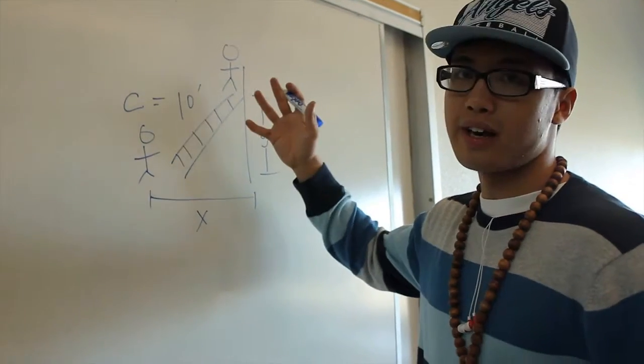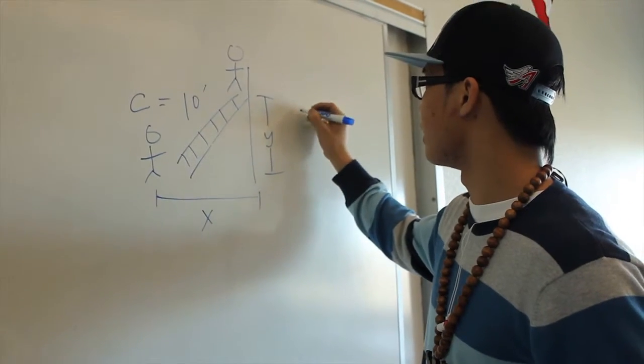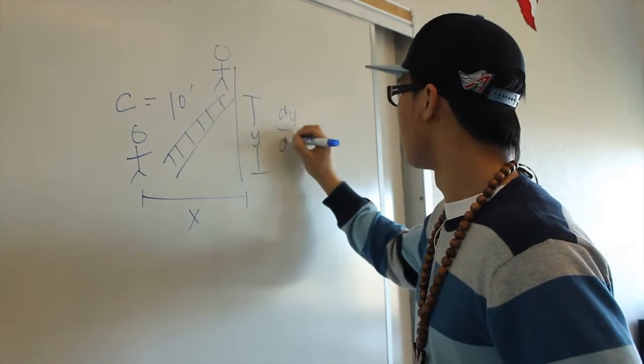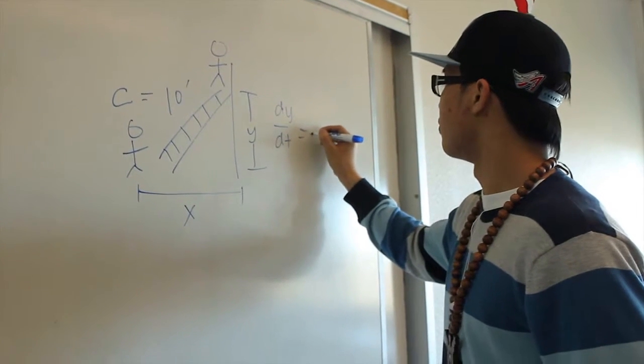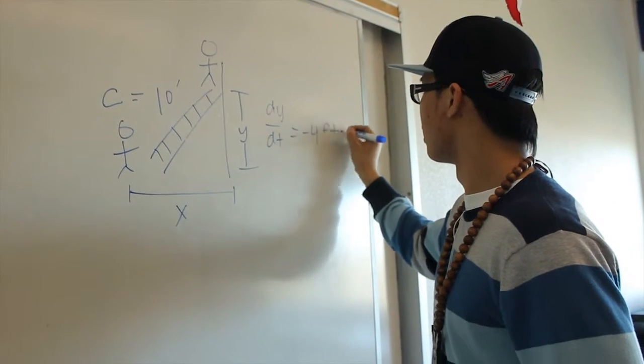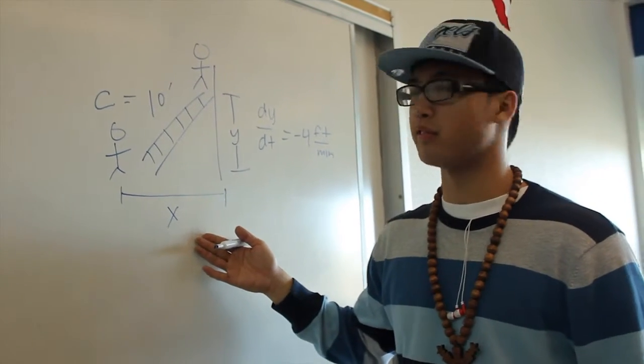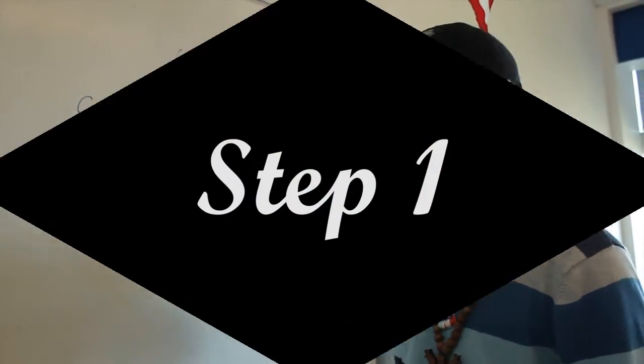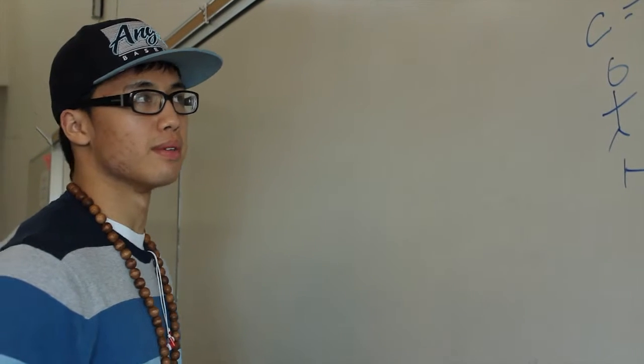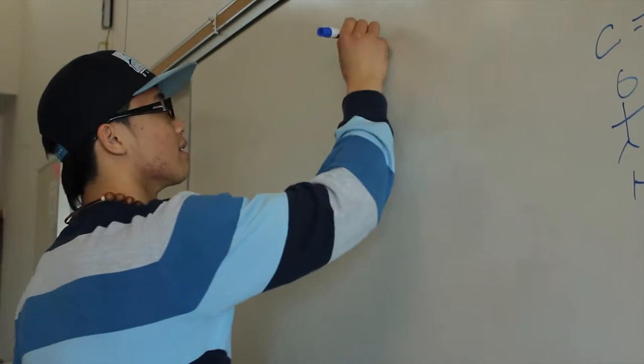So if the ladder is falling down at a rate of 4 feet per minute, how fast will X be before it hits his partner? After drawing out your related rates problem, you're going to be labeling the givens.